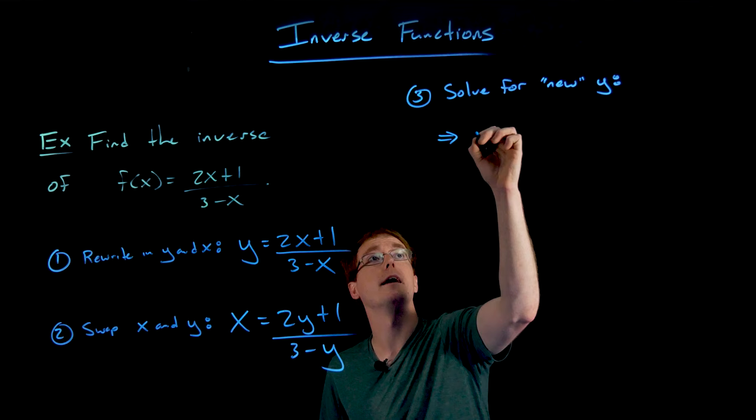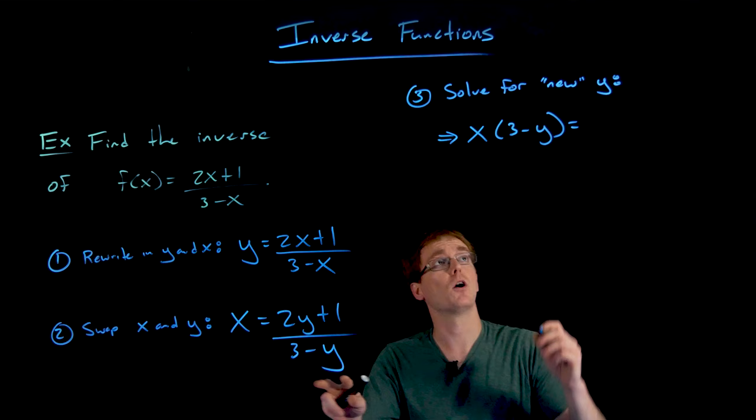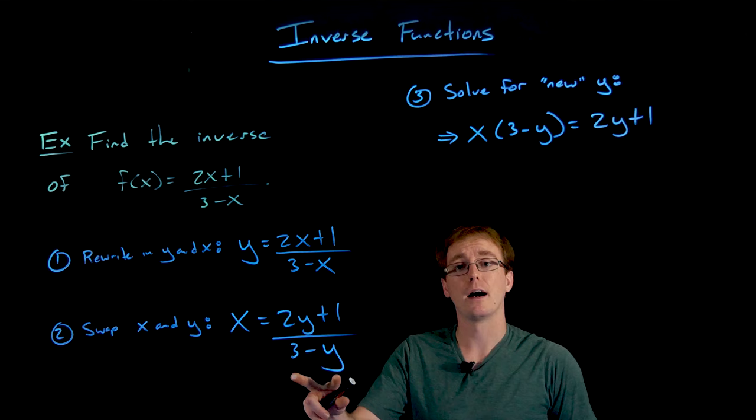So we have to multiply the left-hand side of our equation by 3 minus y. That's how we obtain x times 3 minus y. Then we have to also multiply the right-hand side of our equation by 3 minus y.